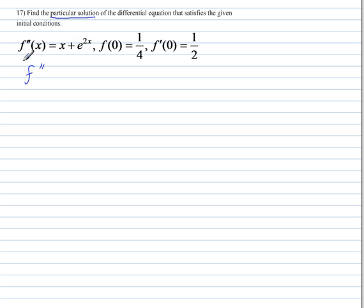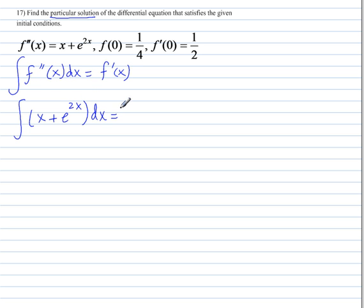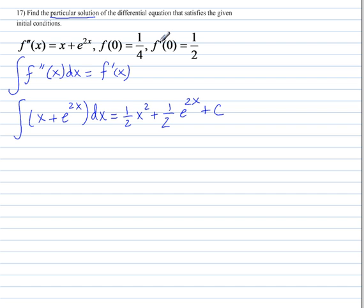We first need to take the antiderivative of the second derivative with respect to X, and this will give us the first derivative. So we're taking the antiderivative of X plus E to the 2X with respect to X. The antiderivative of X is ½X², and the antiderivative of E to the 2X is ½E to the 2X — if you're wondering about that, go back to the earlier video (around number 13 or 15) where I explained how we used u-substitution to do this. Then plus C.